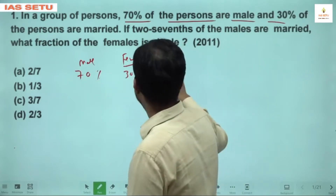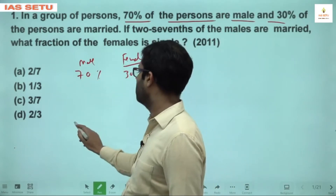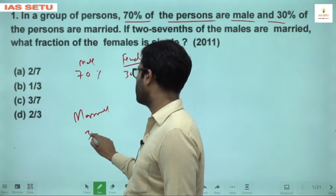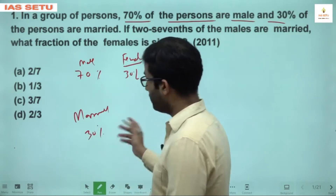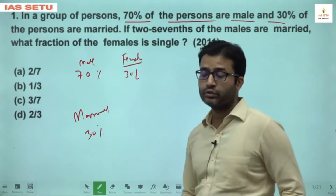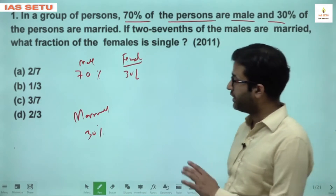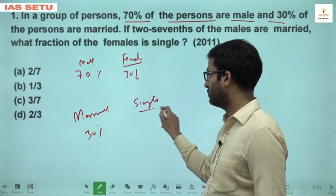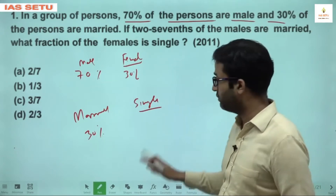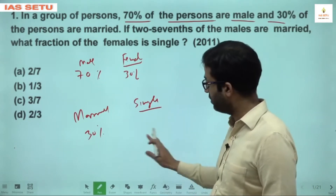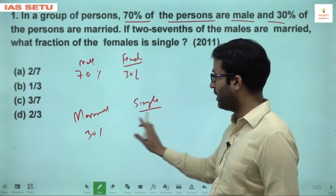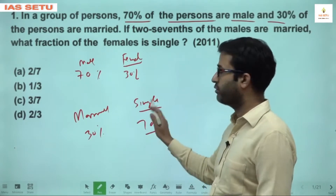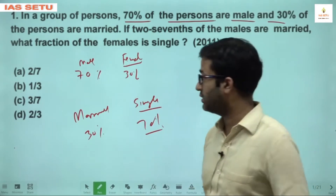Now, 30% of the persons are married. Even here, if they talk about married, it means the remaining are single. UPSC doesn't care about living relationships or committed ones — either married or single. So 70% are single.